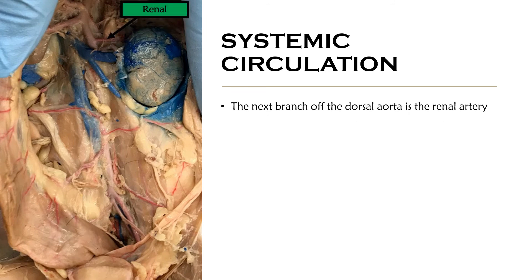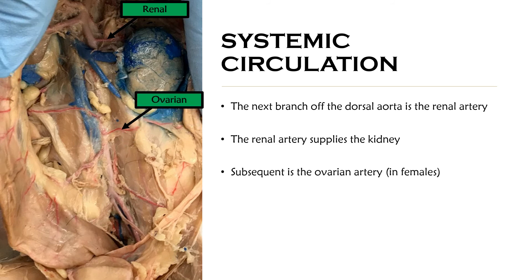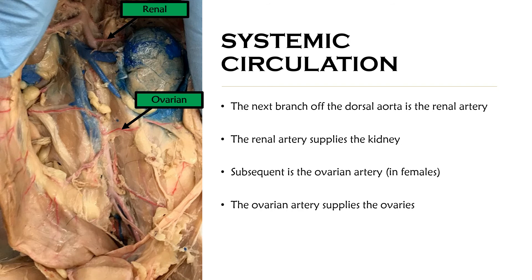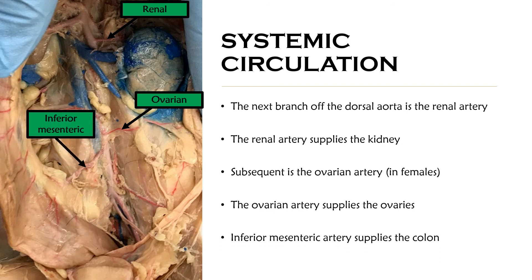The next branch off the dorsal aorta is the renal artery, which supplies the kidneys. Following that is the ovarian artery, in females, which supplies the ovaries. Next is the inferior mesenteric artery, supplying the colon. The superior mesenteric was associated with the small intestine, while the inferior mesenteric supplies oxygenated blood to the colon.